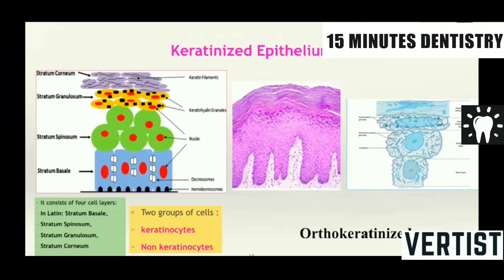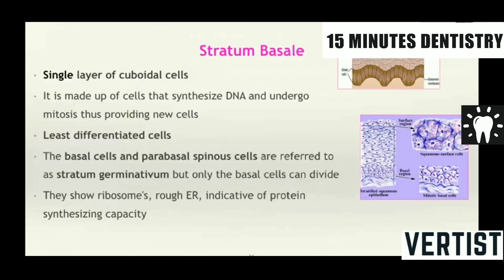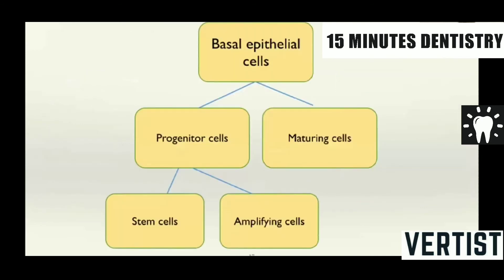Apart from this, there are two groups of cells — keratinocytes and the non-keratinocytes. The first layer is the stratum basalis. These layers are just stacked on top of each other like bricks — called as the stratified squamous epithelium because they are laid out in strata. The lower cell is the single layer of cuboidal cells which are the least differentiated cells. The basal cells along with the parabasal spinous cells are referred to as the stratum germinativum cells. There are basically two populations of cells — progenitor cells and maturing cells. The progenitor cells have two types: stem cells and amplifying cells. Stem cells are non-cycling cells, slowly growing, and involved with mitotic activity. Whereas the amplifying cells are a further maturing type of cells.